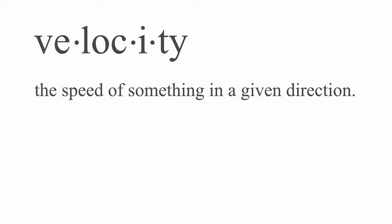To get to where we are today, agility has to be combined with another ingredient, and that ingredient is velocity — the speed of something in a given direction. If we just look at agility, we can go very fast in circles and not get anywhere, moving quickly in multiple directions without achieving our goals. It's agility combined with velocity that gives us speed and coordination in the right direction.